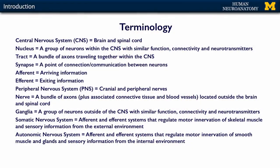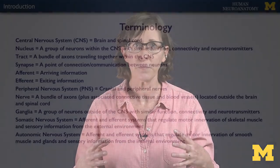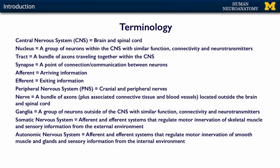Afferent means arriving. Note the alliteration — two A's, arriving information. It can be looked at as information coming to or arriving at a particular neuron, or information arriving at a whole group of neurons. Efferent is exiting information — information that exits a neuron, exits a nucleus, or exits the CNS.